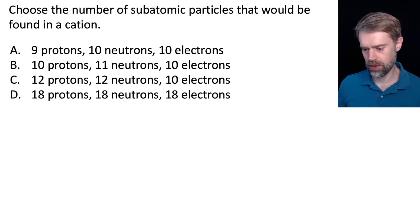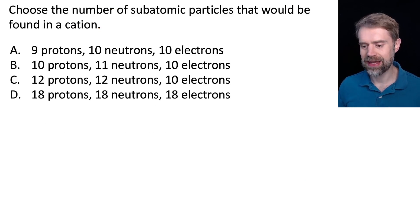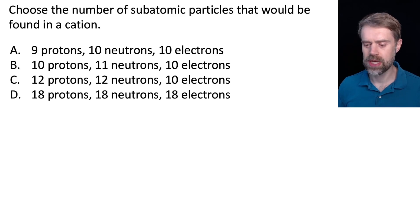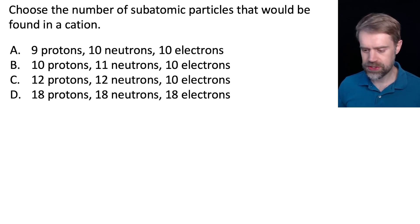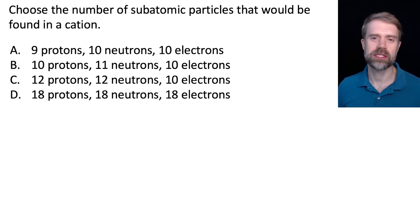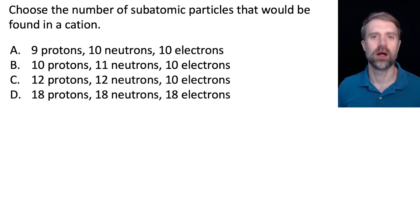Choose the number of subatomic particles that would be found in a cation. We have four choices — take a quick look at them. We'll solve this step by step, and I'll teach you all the stuff that you need to know along the way.